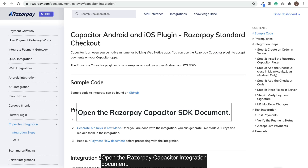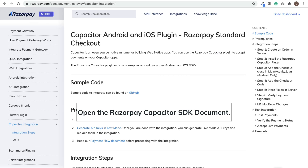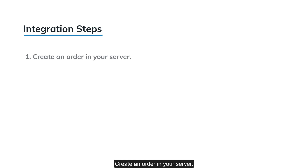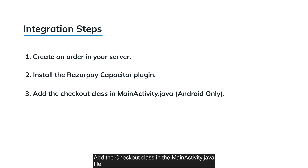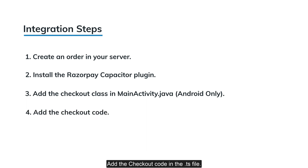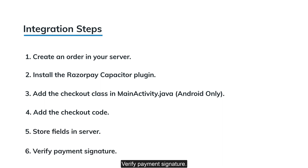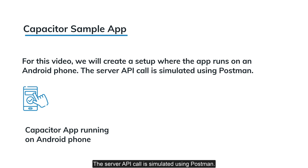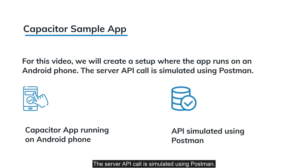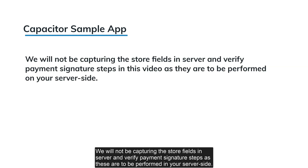Open the Razorpay Capacitor integration document. You must complete these integration steps: create an order in your server, install the Razorpay Capacitor plugin, add the checkout class in the MainActivity.java file, add the checkout code in the .ts file, store fields in server, and verify payment signature. In this video, we will create a setup where the app runs on an Android phone. The server API call is simulated using Postman. We will not be capturing the store fields in server and verify payment signature steps, as these are to be done on the server side.